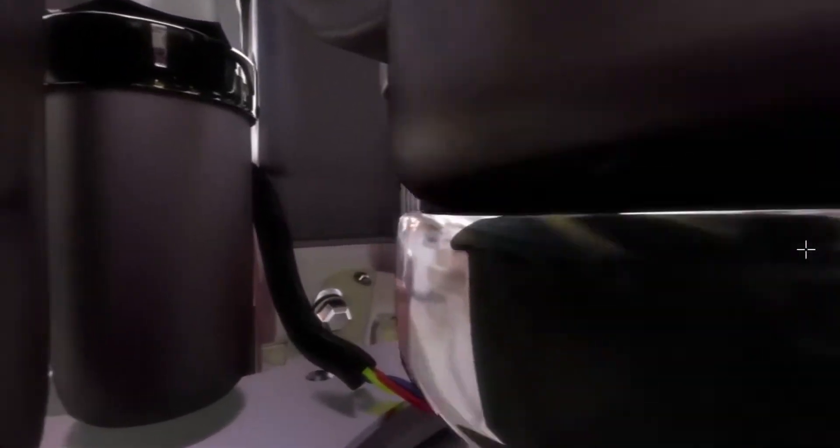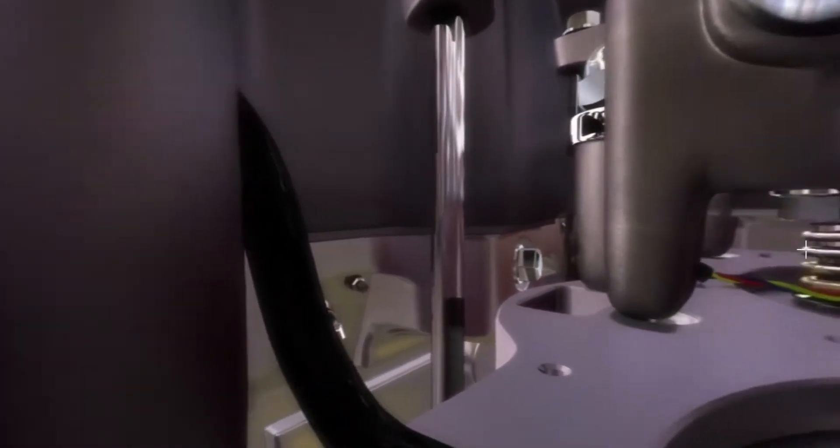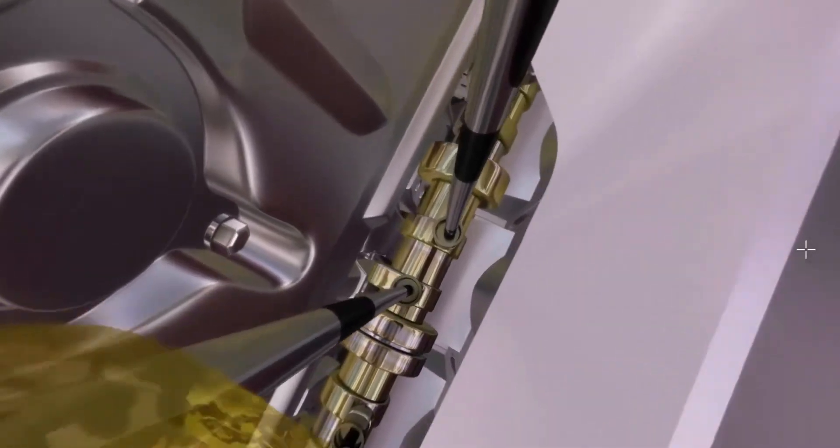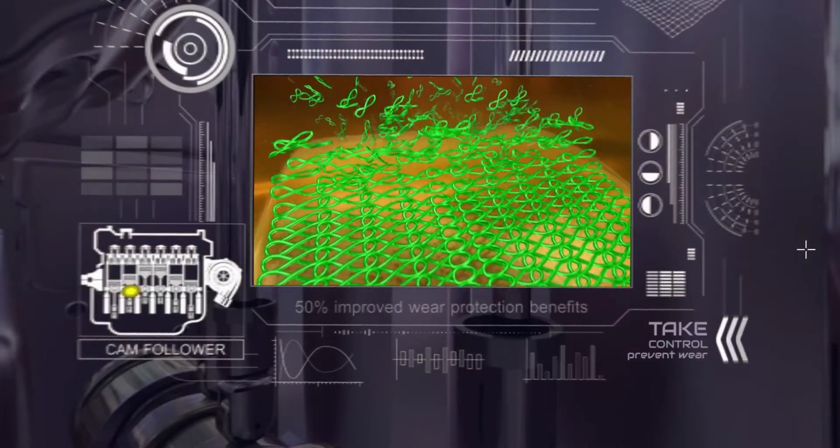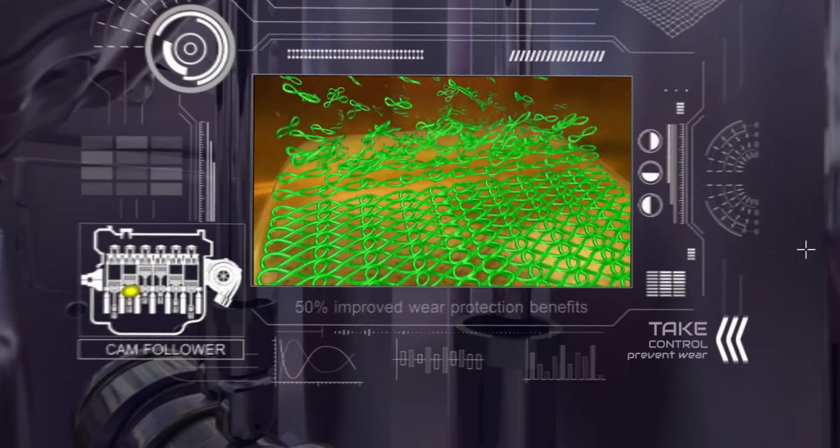Let's begin with the valve train. It bears some of the heaviest loads in the engine, which creates wear that can reduce efficiency and even cause expensive engine failure. An engine oil's anti-wear properties need to coat components with a mechanical barrier that endures to constantly provide a regenerating film.